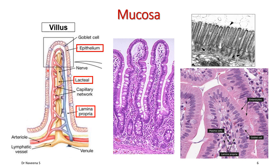The epithelium of the small intestine is described as absorptive columnar epithelium with a striated border along with few goblet cells; these cells are also known as enterocytes. The lamina propria of each villus is composed of loose connective tissue, plasma cells, blood vessels, nerve fibres, and a blind lymphatic channel beginning at the tip of the villus known as a lacteal.